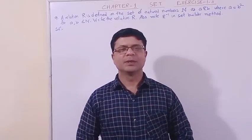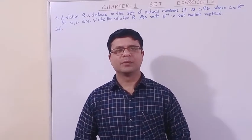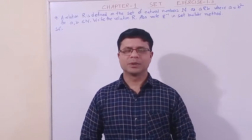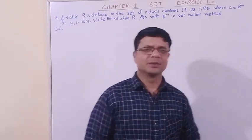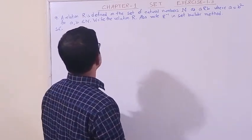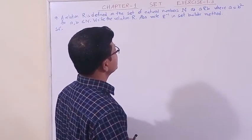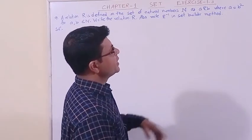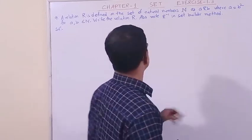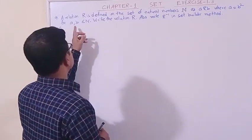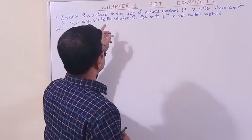Hello students, we are in Chapter 1, the chapter on Sets, Exercise 1.3. Today we have taken question number 9. Let us read the question: A relation R is defined on the set of natural numbers N, where A is related to B such that A equals B squared, for A and B belonging to N. Write the relation R and also write the inverse relation in set builder method.